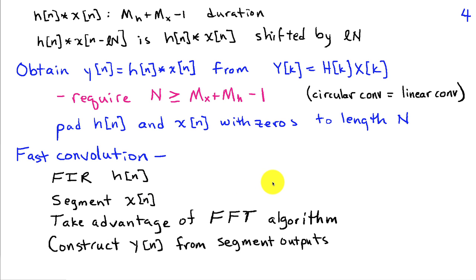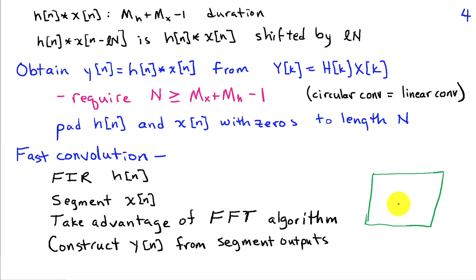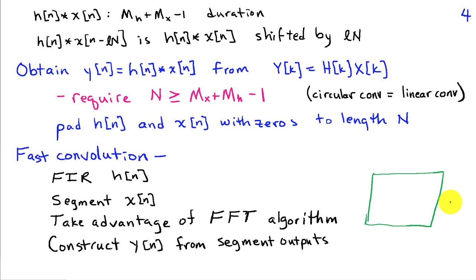It is common to use the DFT for filtering, and it is especially helpful for multidimensional signals such as images. Images are typically finite-dimensional signals supported over some interval, and we want to apply a filter. It's very efficient to use a two-dimensional FFT to compute the two-dimensional DFT coefficients and implement a filter by multiplication in two dimensions. This is a very common application of implementing filters in the frequency domain.